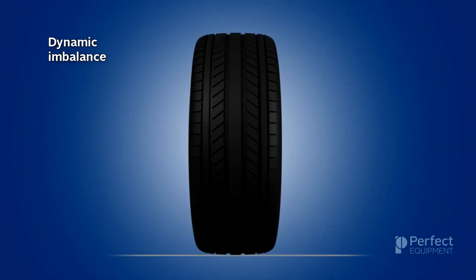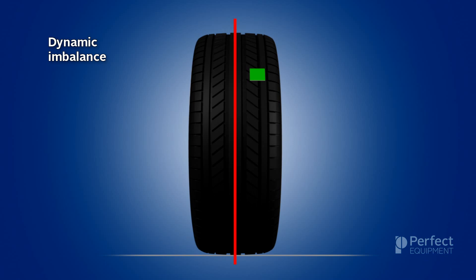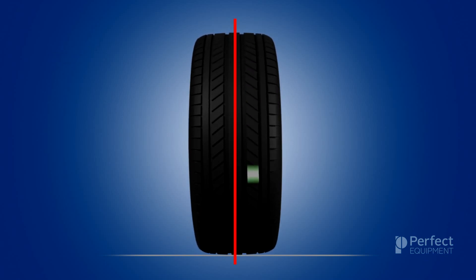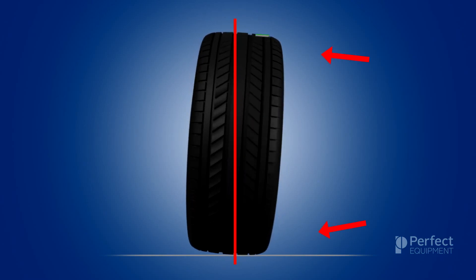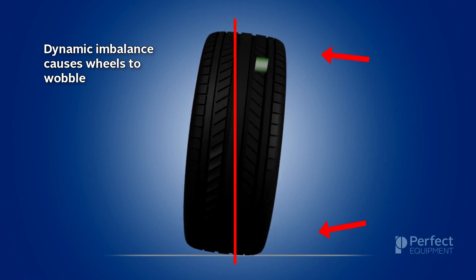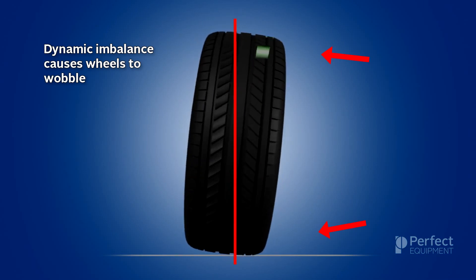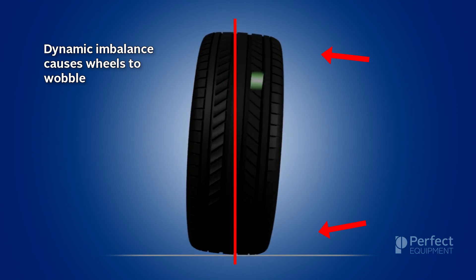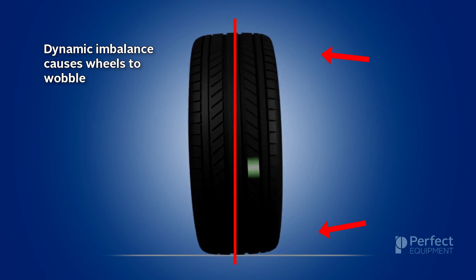Dynamic imbalance is characterized as being an imbalance on the outside and/or inside of the assembly as it rotates around the side center line, shown in our example as a green square on the outside of the center line. As the tire rotates with uneven weight distribution, the centrifugal forces of the imbalance cause the wheel assembly to throw the heavy spots outward when they reach the outermost points of the rotation. As the wheel assembly throws the heavy spots outward, a severe side-to-side wobble is evident.